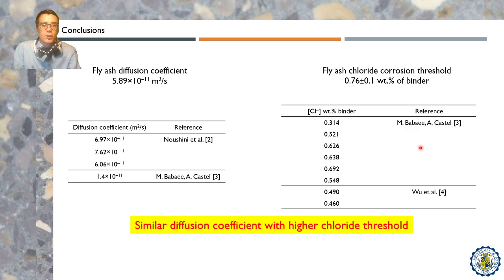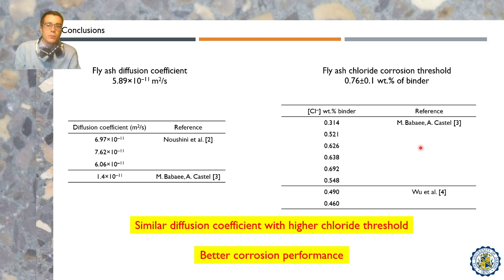As a summary, the values obtained can be compared with previous results showing similar diffusion coefficients but higher chloride corrosion threshold. This results in a better corrosion performance. The literature used for this study is presented here for your reference. Thanks for your attention.